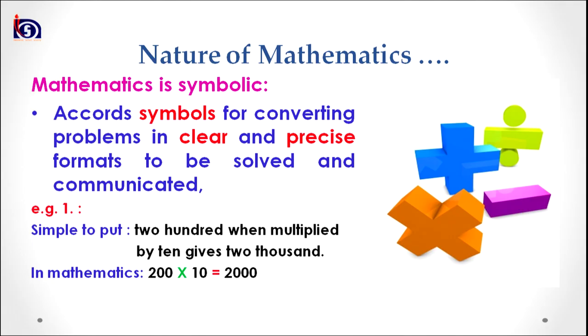Moving towards the second characteristic of the nature of mathematics: mathematics is symbolic in its nature. Being symbolic refers to according symbols for converting a problem into a clear and precise format, which mathematics does to solve and communicate problems more precisely, more accurately, and more finely.